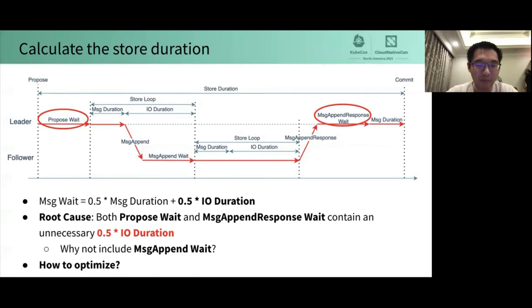So the root cause is both propose wait and message append response wait contain a non-necessary 0.5 IO duration. But why message append wait is not included here? It seems to be very similar to them. It's because followers must wait for IO to be completed before sending a message append response to the leader. There's no difference whether the message append is handled earlier or not. Now we found the problem. How to optimize it?